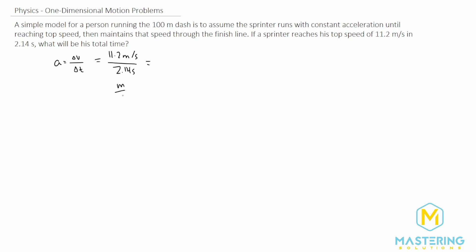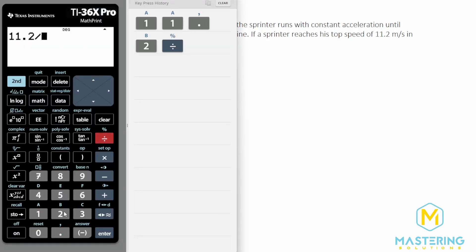So we have meters per second divided by seconds, or meters per second squared - that's the correct units. So 11.2 divided by the time,